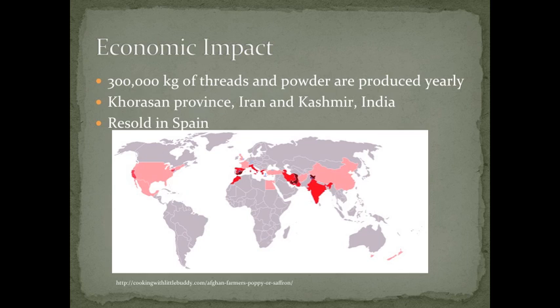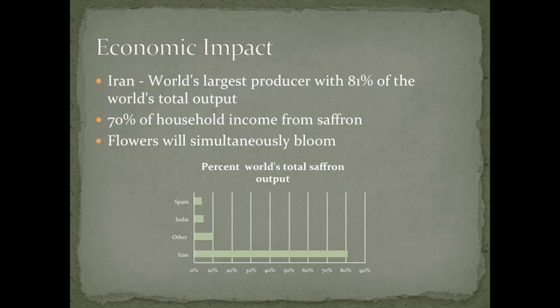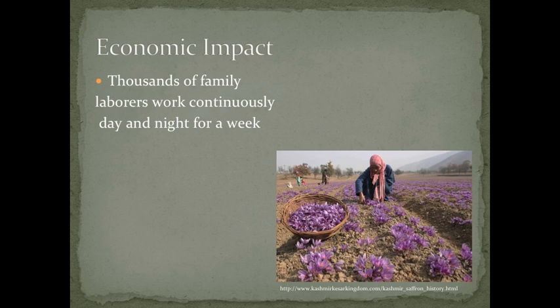300,000 kilograms of saffron thread and powder are produced yearly. Most are produced in the Khorasan province in Iran and the Kashmir province in India, and then resold globally. One of the major buyers of saffron is Spain. Iran is the largest producer of saffron, with 81% of the world's total output. For people living in Iran, about 70% of household income is from the saffron industry. When saffron flowers bloom, about 100 people per acre are required to harvest the saffron. Thousands of family laborers work continuously, sometimes for over 40 hours, picking the stigmas off of saffron flowers. They are paid barely enough to survive.